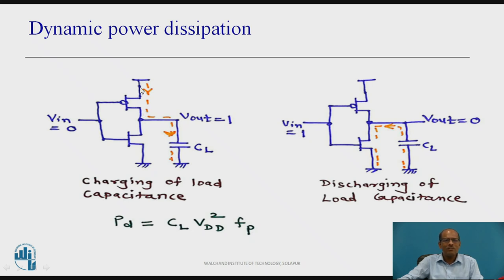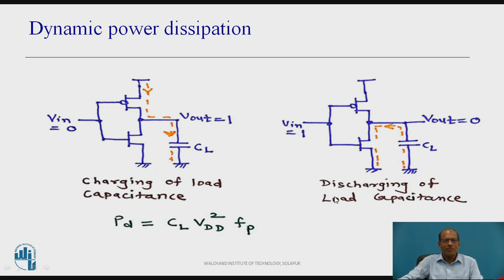Similarly, when input is 1, NMOS is conducting and PMOS is in off state. The load capacitance, which was charged earlier when output was logic 1, now discharges through NMOS. The discharge current flows through NMOS, causing power dissipation across NMOS. So when output becomes 1, there is charging of the load capacitance through PMOS, and when output is 0, there is discharging through NMOS. This charging and discharging produces the dynamic power dissipation.